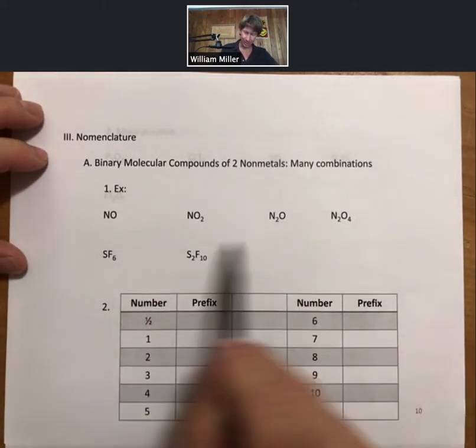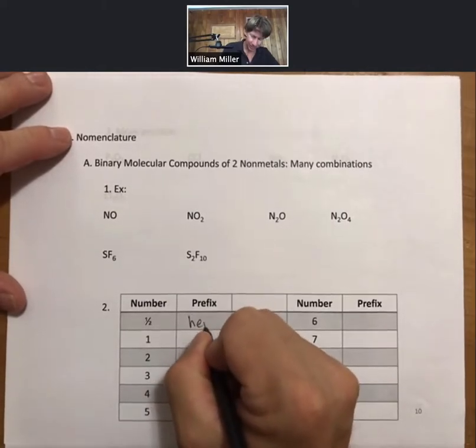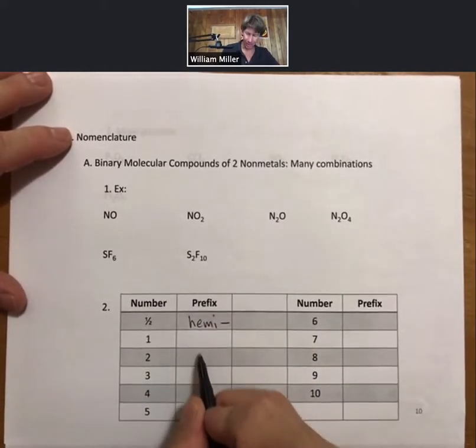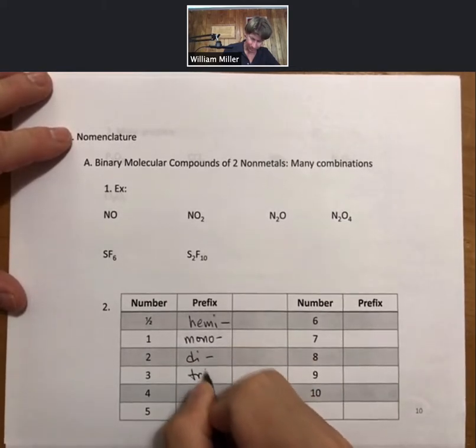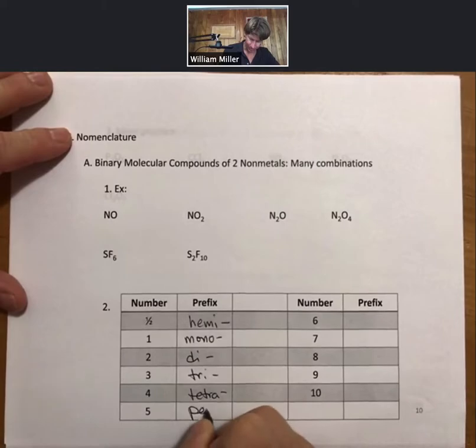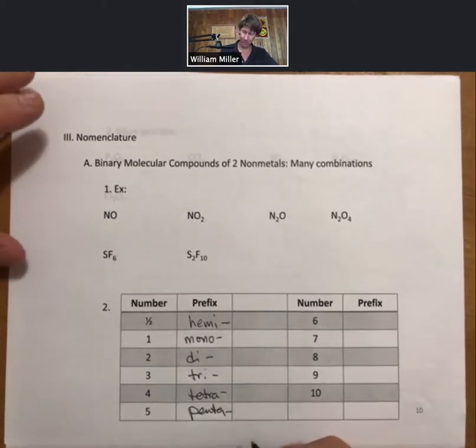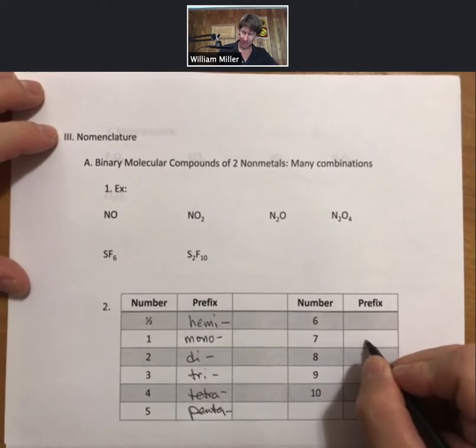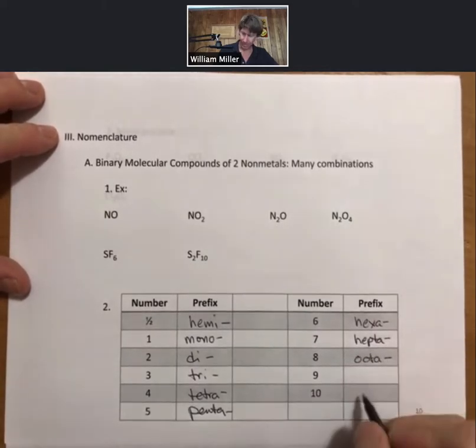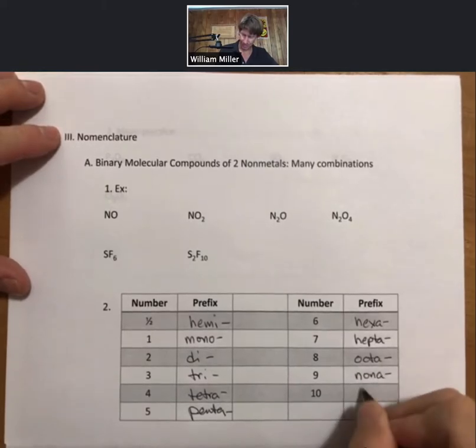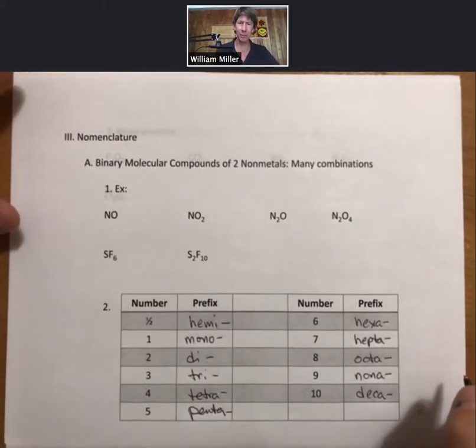Looking at some of these examples, let's go through what the number prefixes are. Number prefix for half is going to be hemi, then mono, di, tri, tetra, and penta. These little dashes mean these are prefixes. This part of the word attaches to the rest of the word. Hexa for six, hepta, octa, then nona and deca. Of course the number system goes and does all the numbers, but these are the limited set of numbers that you have to memorize for this class.